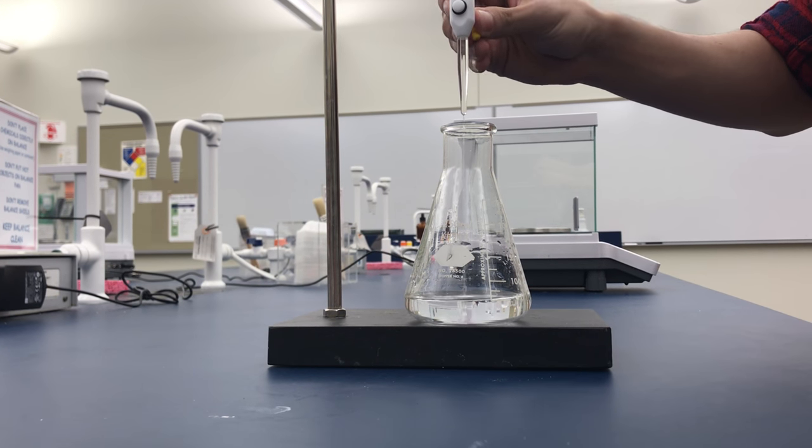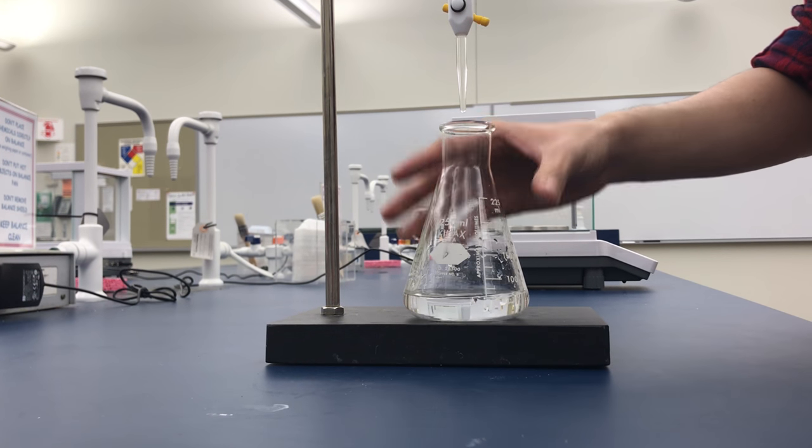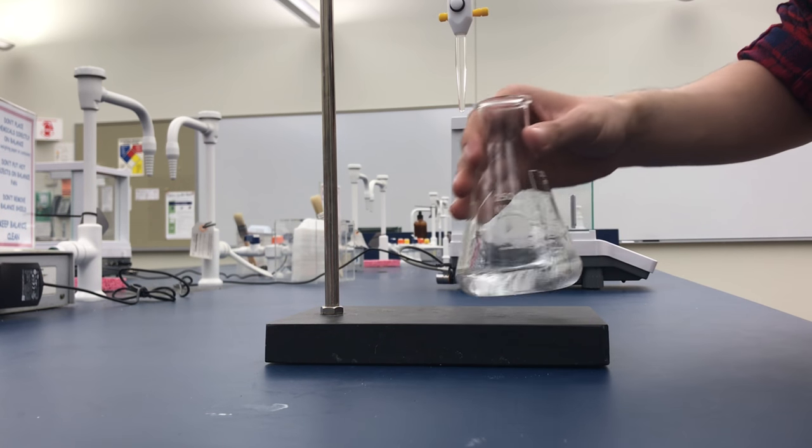The burette dispenses the known solution into a flask of the unknown solution containing the indicator. As the known is added to the unknown, the solution will change color then go back to being colorless.